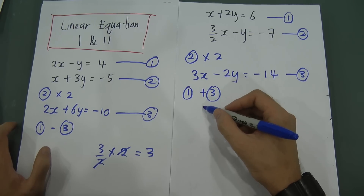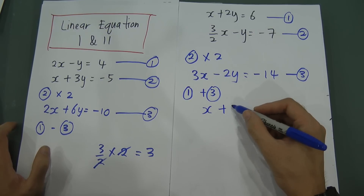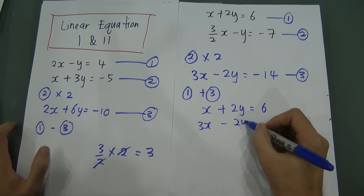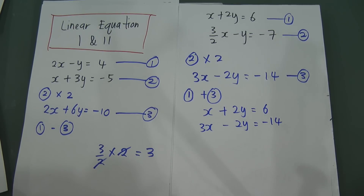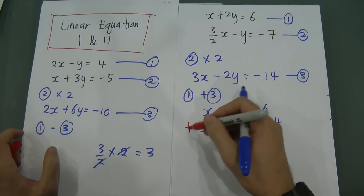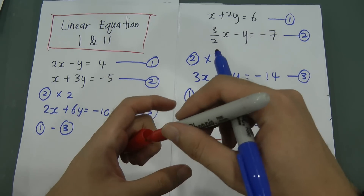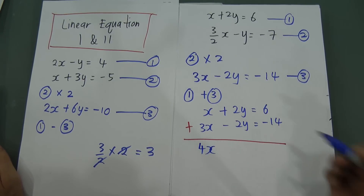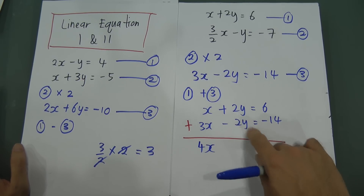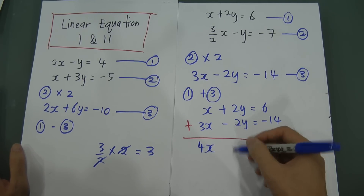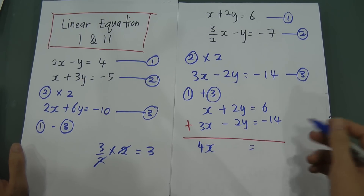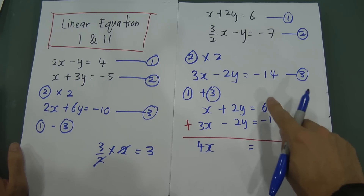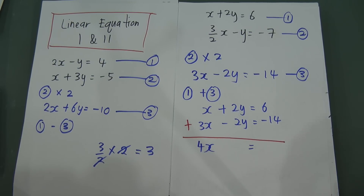Writing it out: x plus 2y equal to 6, and 3x minus 2y equal to negative 14. Adding them: 2x plus 3x gives 4x. Positive 2y plus negative 2y gives zero, so y is deleted. Equal to 6 plus negative 14, which means 6 minus 14, giving negative 8.